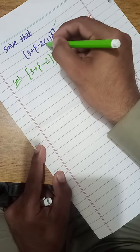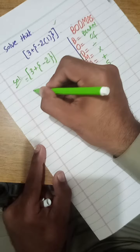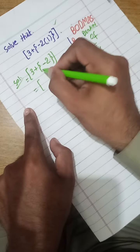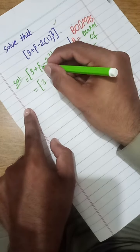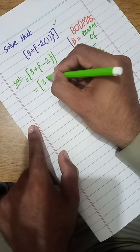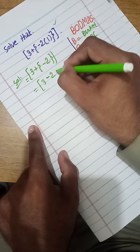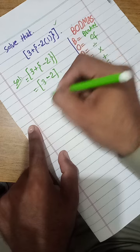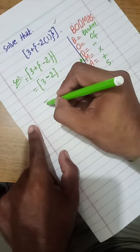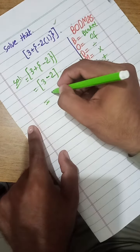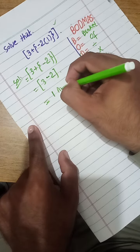2 times 1 is 2 with a negative sign. And again we solve the curly brackets, which gives negative 2 times 1. At last we solve the square bracket: 3 minus 2, which gives 1. That is our solution.